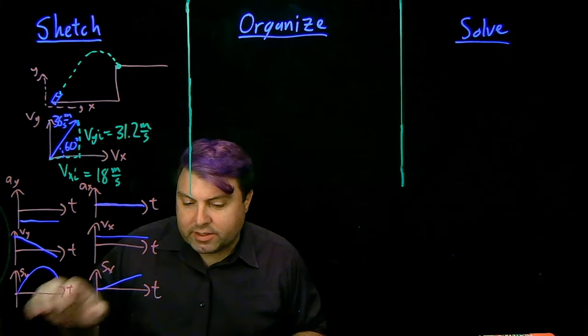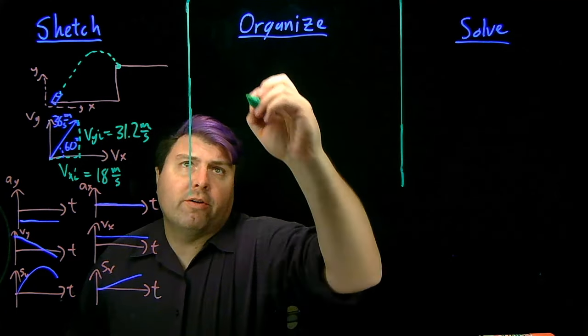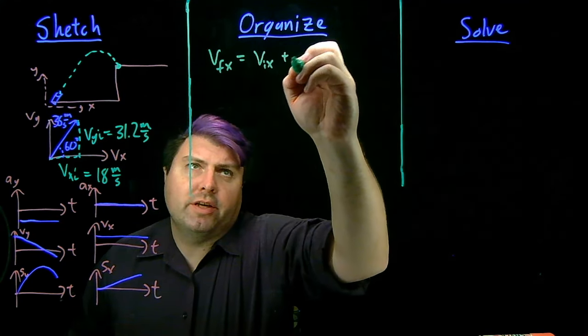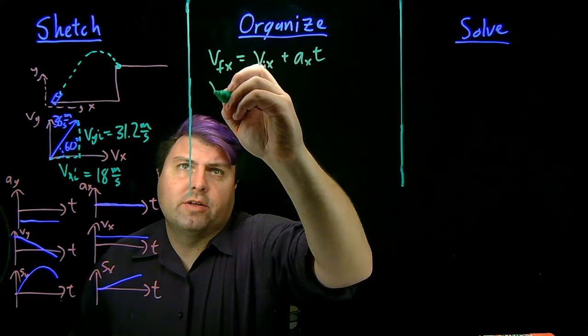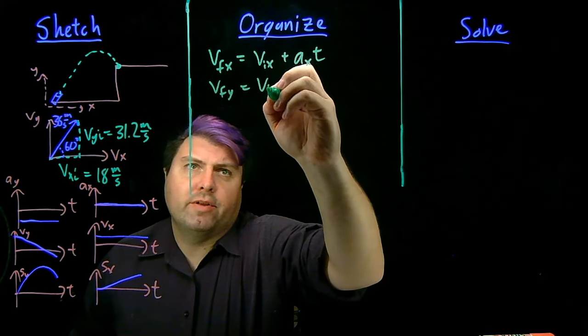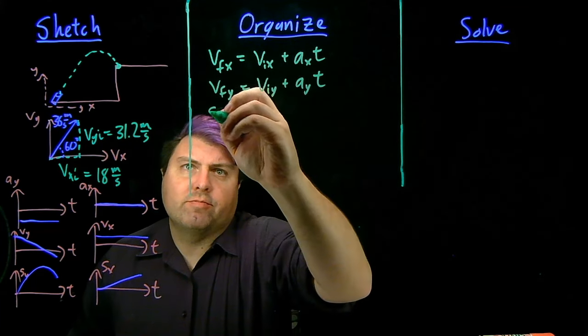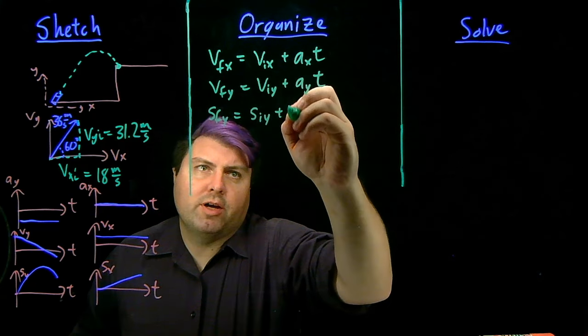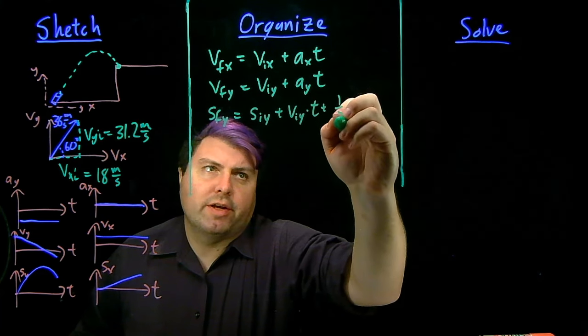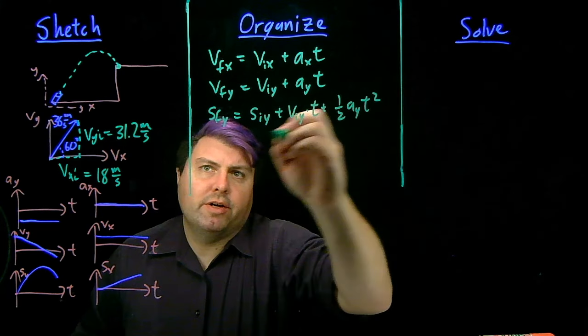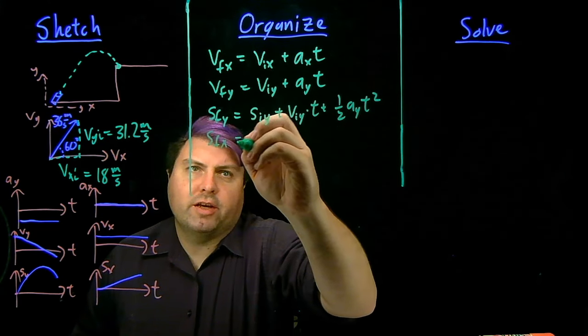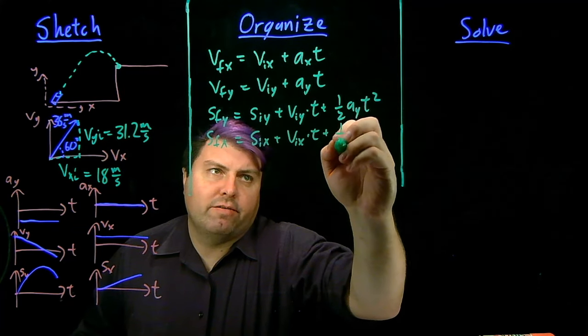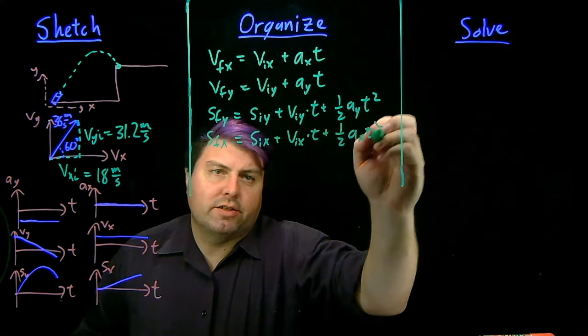So in our organized step we want to write our equations so we have velocity final in the x equals velocity initial in the x plus ax times time, velocity final in the y equals velocity initial in the y plus ay times time, position final in the y equals position initial in the y plus viy times time plus one half ay t squared, and position final in the x equals position initial in the x plus initial velocity x times time plus one half acceleration in the x t squared.